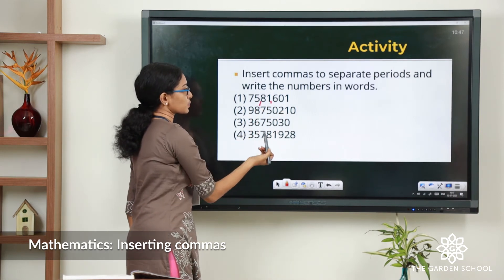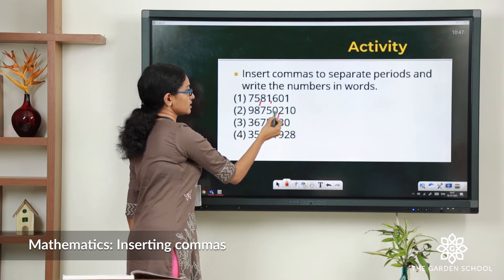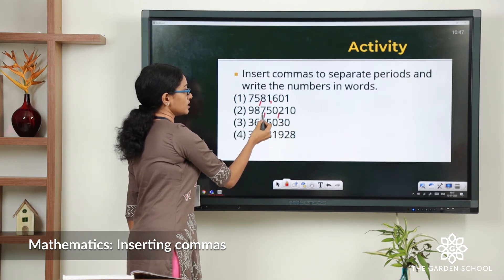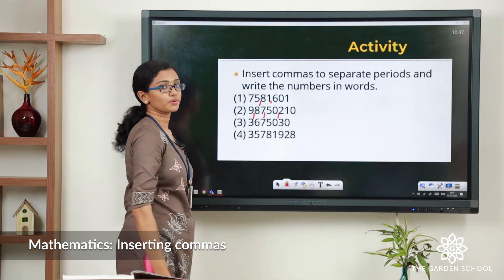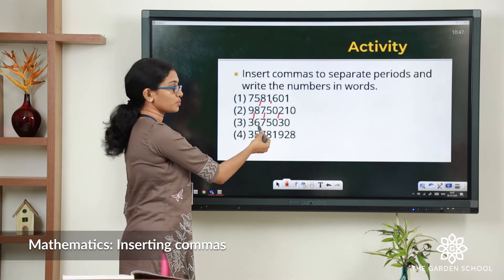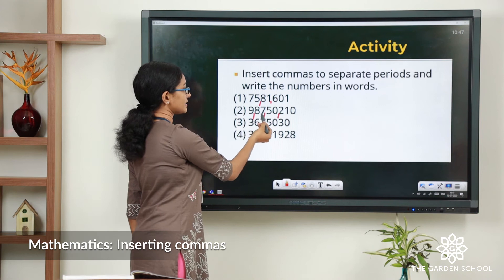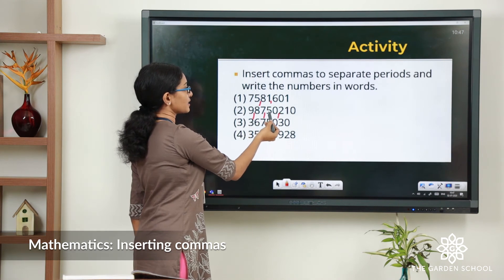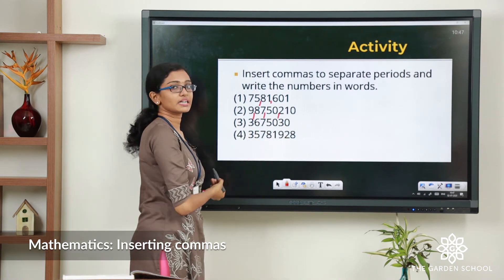For the next one: ones, tens, hundreds — comma — thousands, ten thousands — comma — lakhs, ten lakhs — comma — then the crore. So this one will be 9 crore 87 lakhs 50,210.